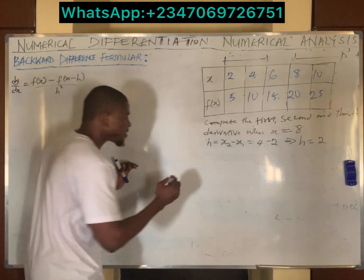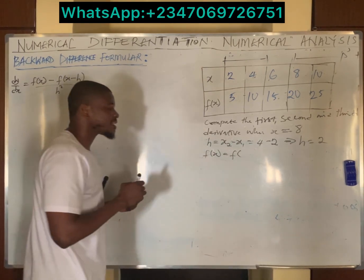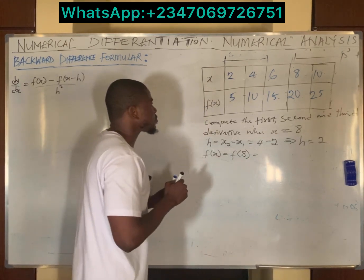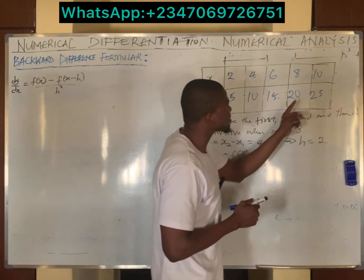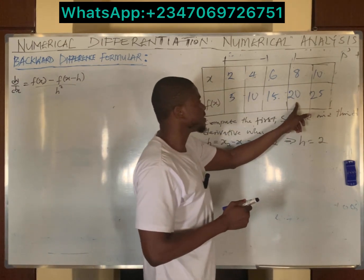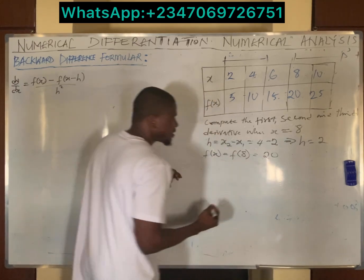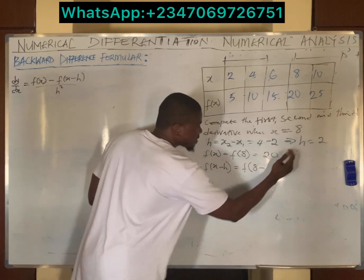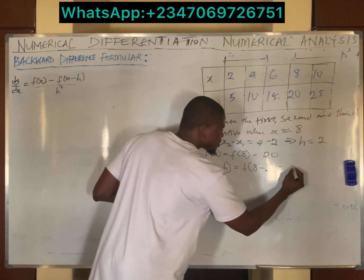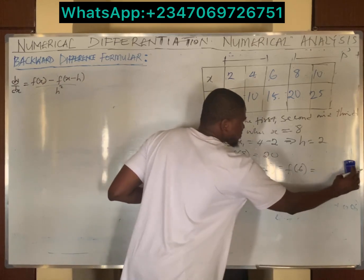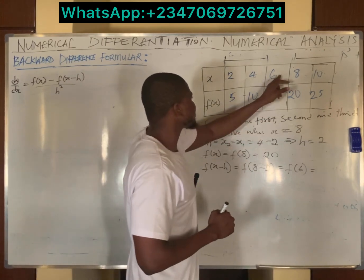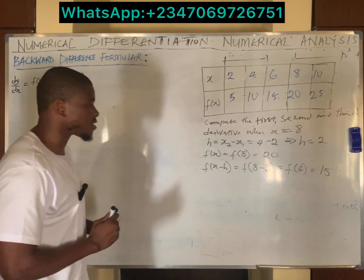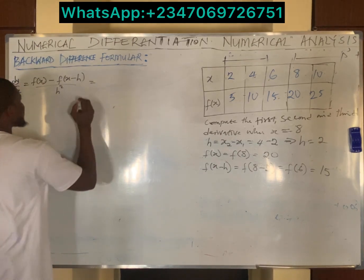We need to find f(x), which is the value of the function at the point of interest, x equals 8. From the table, when x is 8, y is 20, so f(8) equals 20. Next, we find f(x minus h), which equals f(8 minus 2) = f(6). From the table, when x is 6, f(x) is 15. So f(x minus h) equals 15.